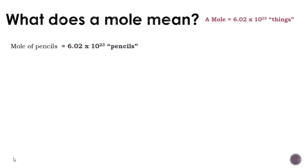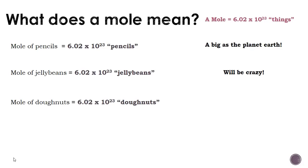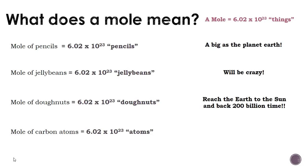So if we wanted to talk about a mole of pencils, we can say we have 6.02 times 10 to the 23rd pencils. We can have a mole of jelly beans. We can have a mole of donuts, which is super crazy. Or we can even have a mole of carbon atoms. Regardless, those things in our mole can be replaced with multiple things. In chemistry, we like to talk about atoms, particles, and even molecules.